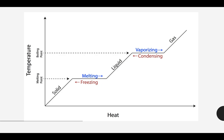At the boiling point, energy is absorbed and used to break apart those particles and move them from the liquid phase to the gas phase. Then the gas can continue increasing in temperature. Eventually we get to the plasma state, but since we're not talking about stars at this point, we're really just going to stick to solid, liquid, and gas — talking about melting and freezing, and then vaporization and condensation.